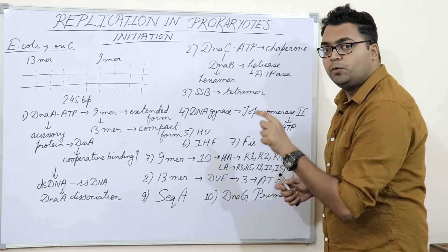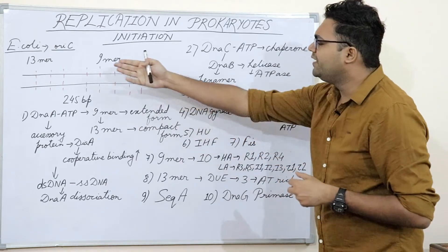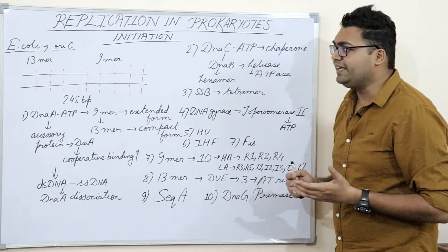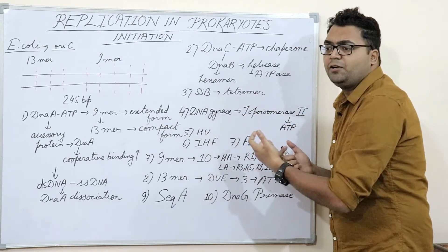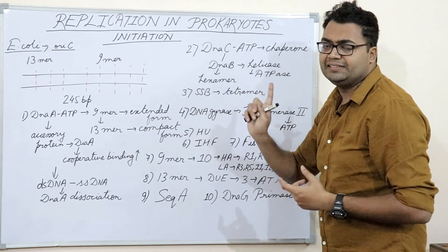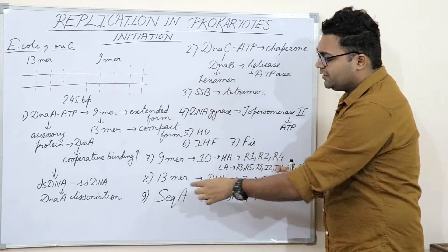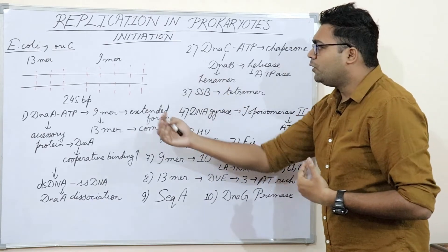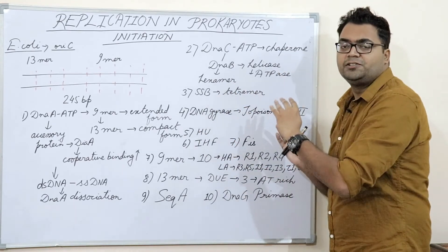The last regulatory protein is SeqA. SeqA sequesters all hemimethylated GATC sites in the ORI, repressing the process of over-initiation or re-initiation when it is not required. Because in one cell cycle DNA replication has to happen only once, not twice. So SeqA, IHF, and FIS go through a scrutiny process to ensure that re-initiation does not occur under any circumstances.